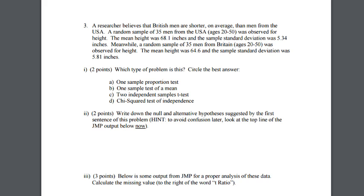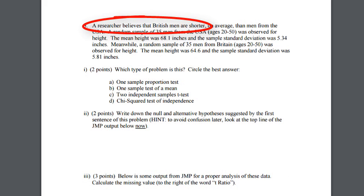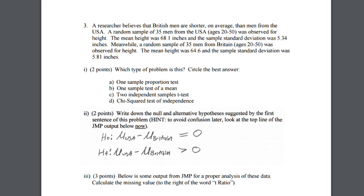The researchers want to see if there is evidence that British men are shorter than American men. Always look for that inclination in the question — some sort of goal or alternative hypothesis. We write our null as μ_US minus μ_Britain equals zero, meaning there is no difference between the true mean heights. The alternative is μ_US minus μ_Britain is greater than zero.